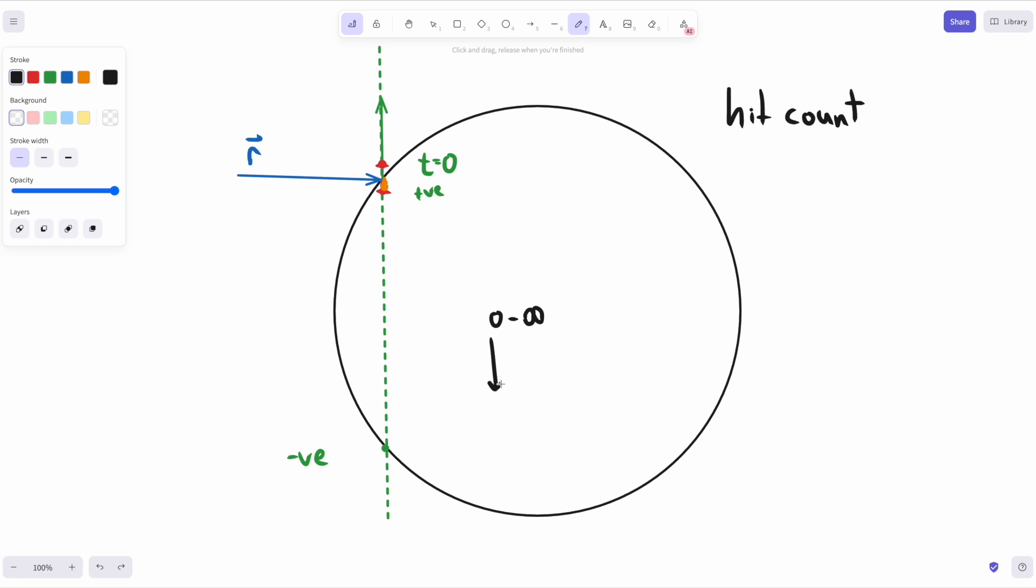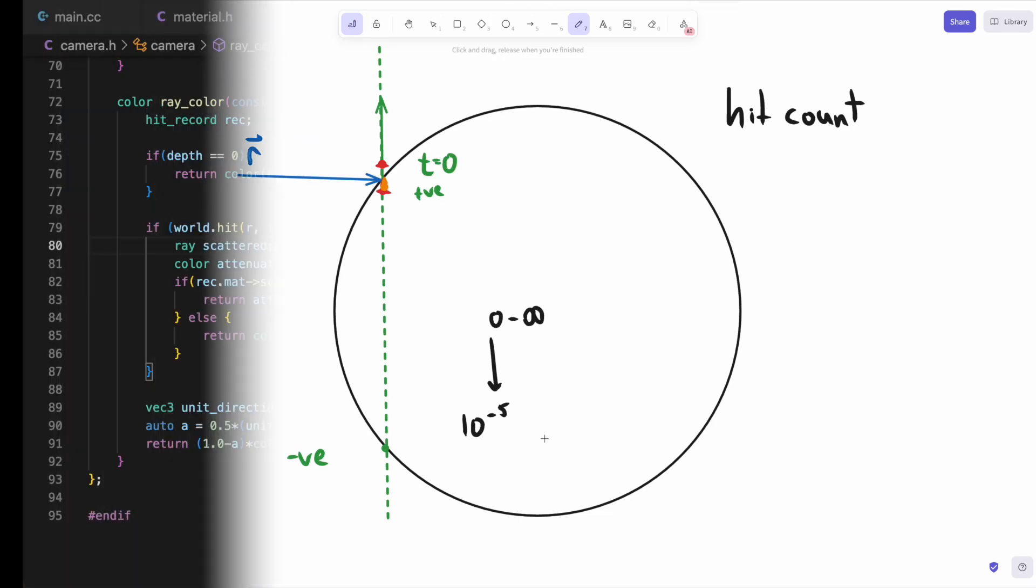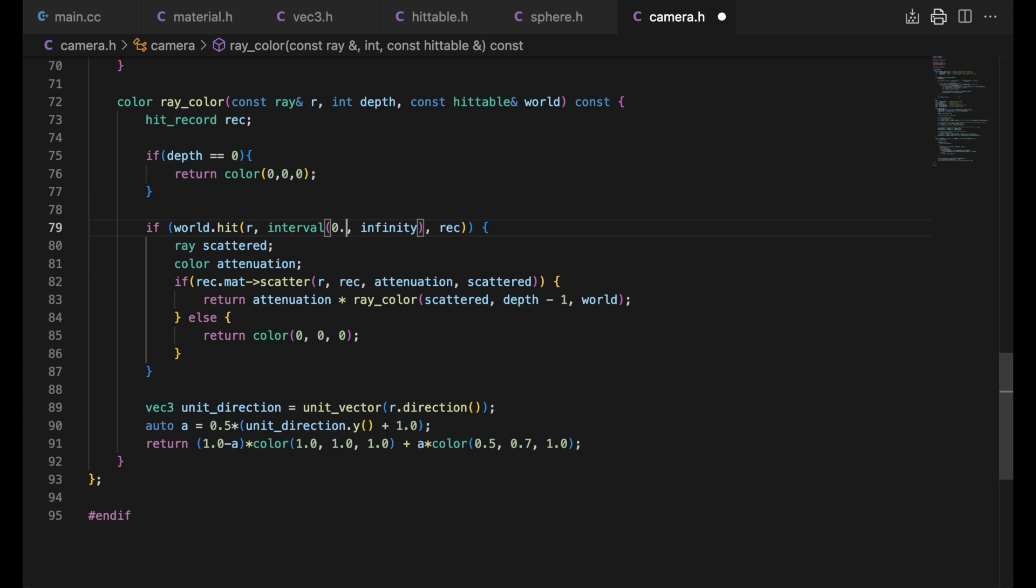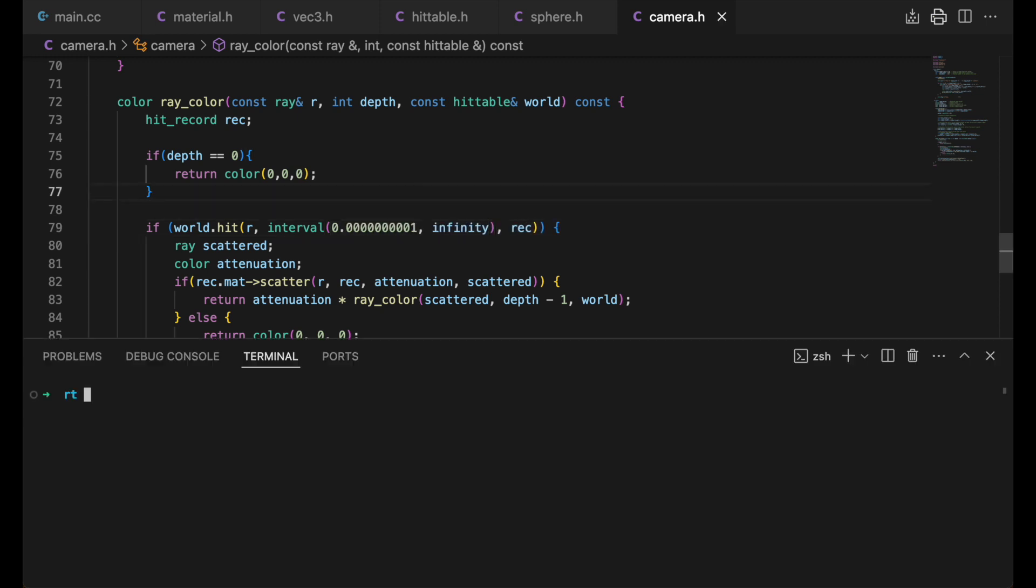This explains the black pixels. The solution is actually very simple. Account for this in the range. If the t value is super small, we can assume it's because of this rounding error. Running, we see we're back.